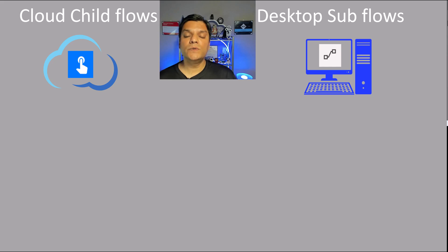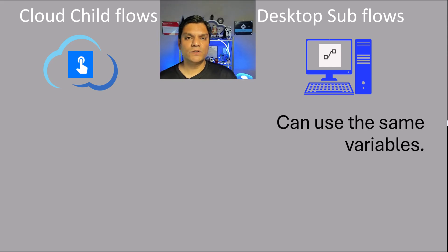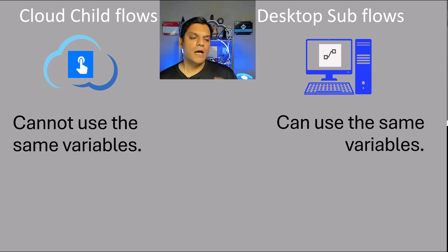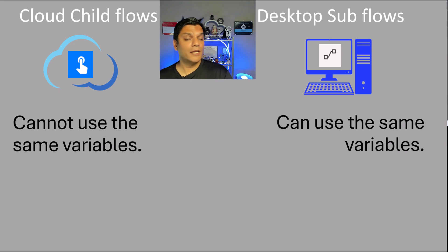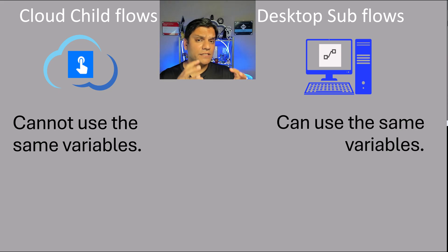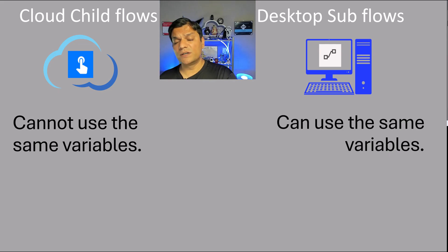The second difference has to do with variables. For the desktop subflows, the subflows can go ahead and use the same variables as the main flow. However, for the cloud flows, they cannot — and I'm talking specifically about variables set inside the cloud flow, not environment-level variables.